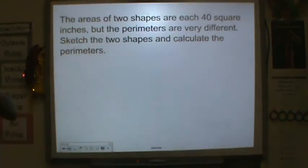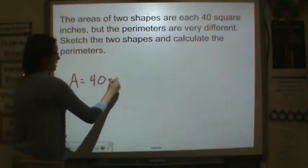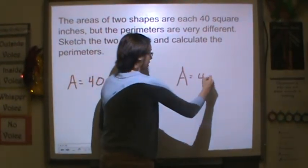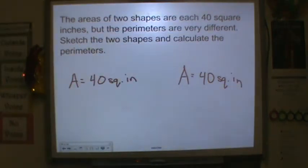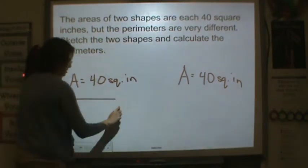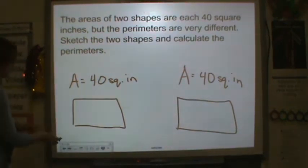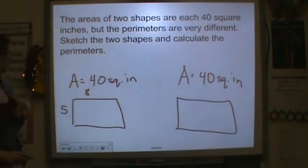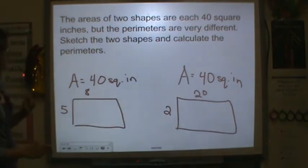The areas of two shapes are each 40 square inches. So I've got an area is 40 square inches. And then another area is 40 square inches. The perimeters are different. Sketch the two shapes and calculate the perimeters. I've got two shapes. Now remember, area is two numbers multiplied by each other. So I could have a 5 by 8 because 8 times 5 is 40. I could also have a 2 by 20 because 2 times 20 is 40.